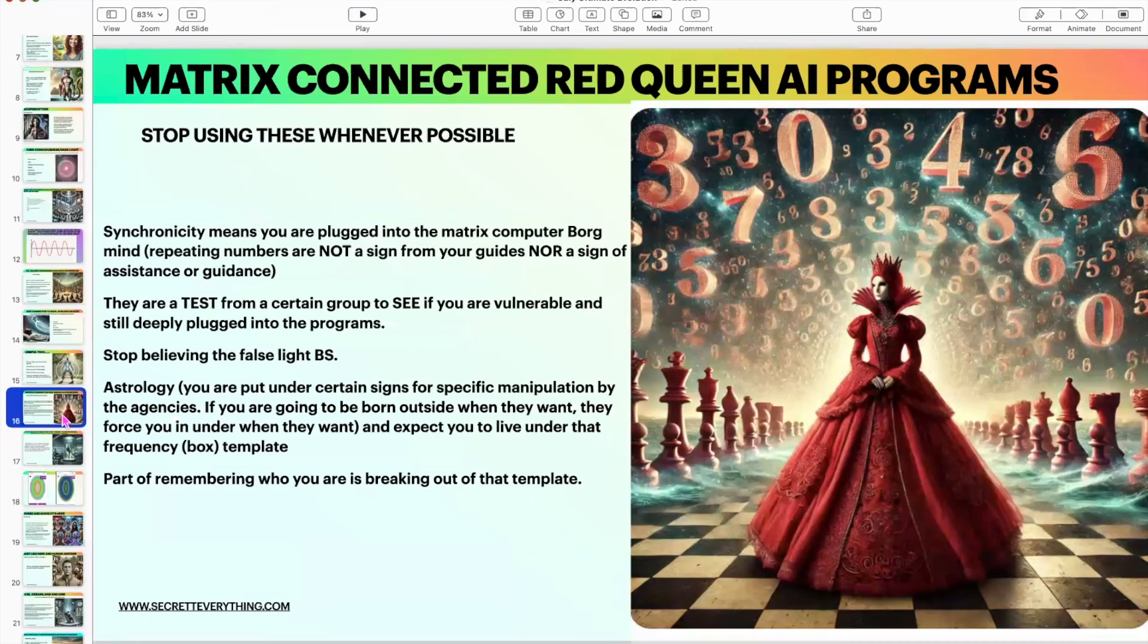Repeating numbers have a frequency—we're not talking about that. So I have panels that are like, 555 has this frequency and it does this. That's true. That's not what I'm talking about. I'm talking about your mental interpretation of when you see 11:11. And yes, I'm aware I used to teach different things a long time ago.